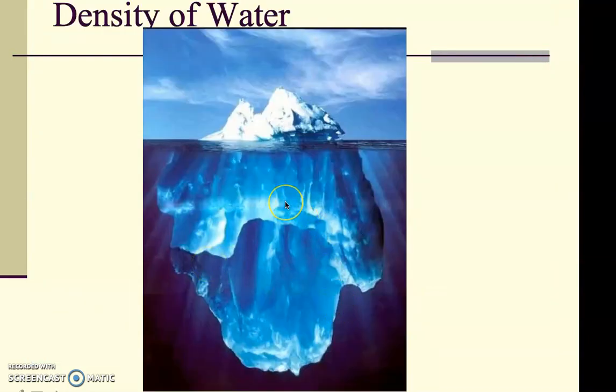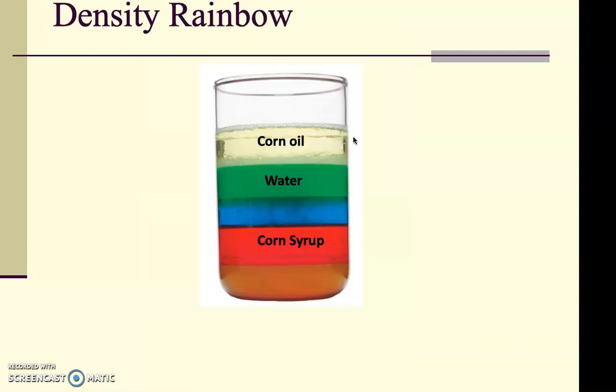So if you look at ice, ice has a density of 0.92, which tells us that 92% of the ice, this iceberg here, is below water. This small percent of it is above water. It's floating at the surface. It's not floating directly on top. Ice still has mass. Then you have like a density rainbow. You have oil, which has a lower density than water. Corn syrup, which has a higher density than water. So it's going to sink, whereas oil will float.